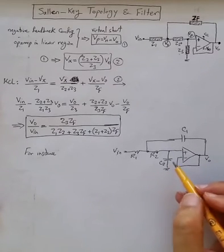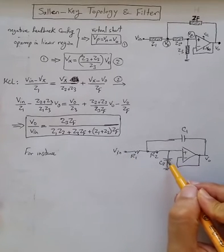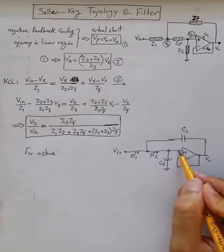If you have a very high frequency sinusoid here, this capacitor will short this node to ground. So the voltage here, the effective voltage here, would be zero.